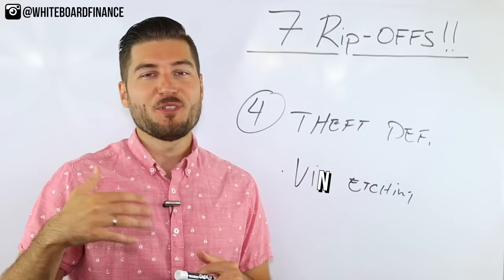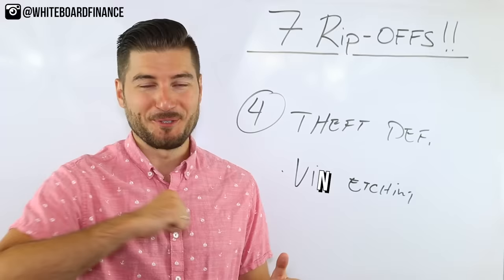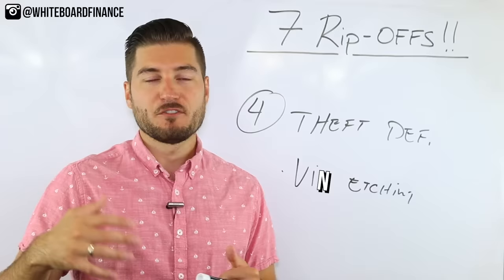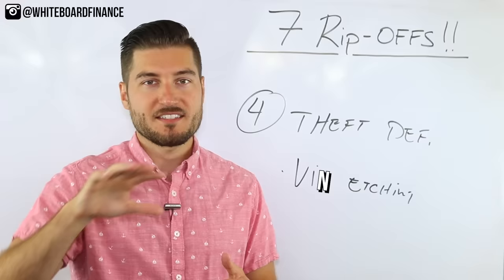No thief is going to check the windows or the windshield. If they're going to steal your car, they're either going to bust that window or they're going to get into the car by bypassing the security and the locks and they're going to drive off and they're not going to care. The theory behind VIN etching is that if the thief goes to sell this car later, it's going to cost them a lot of money to replace each pane or each glass and the windshield which will ultimately lower the cost or lower the profit of that theft.